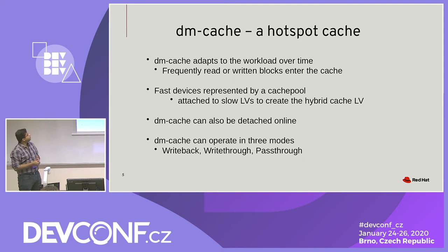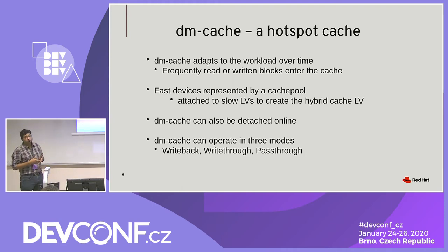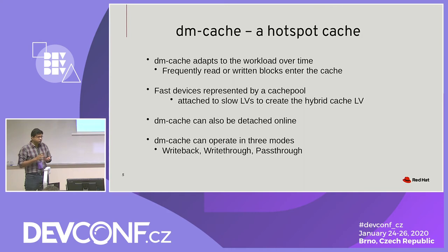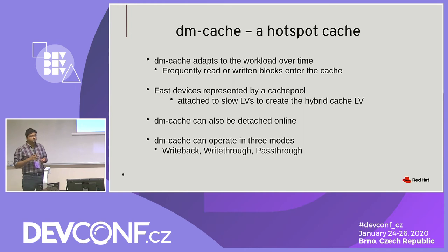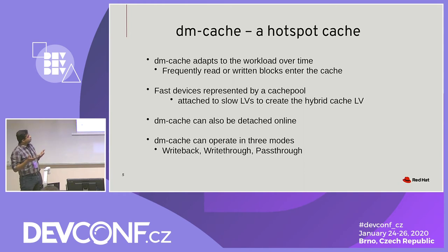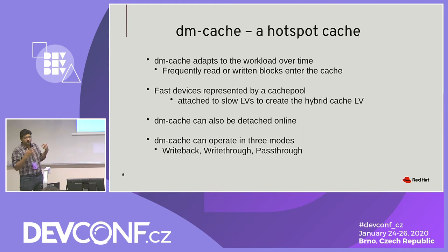DM cache does cache promotions and demotions — frequently accessed blocks on the origin get moved to the cache. Initially when you set it up it's a cold cache, so the first time you set up DM cache you may see performance worse than with no caching at all because nothing has been promoted yet. After using it for a certain amount of time the cache becomes warm, blocks are promoted, and you start to see the performance boost you expect. Fast devices in DM cache are represented by a cache pool, which is a type of logical volume with a metadata and a data logical volume — similar to thin provisioning thin pools.